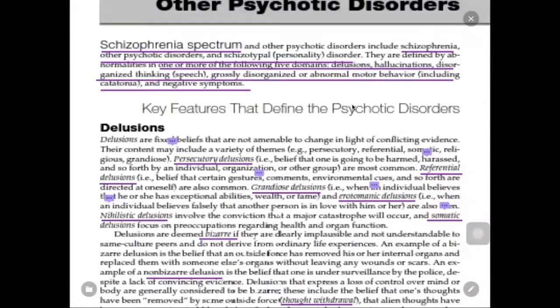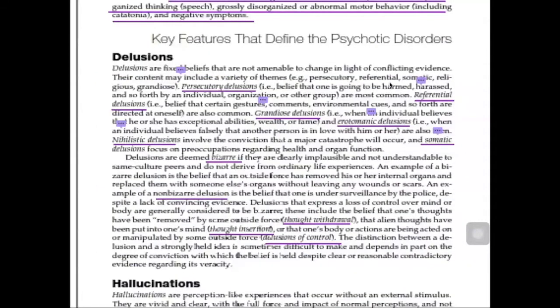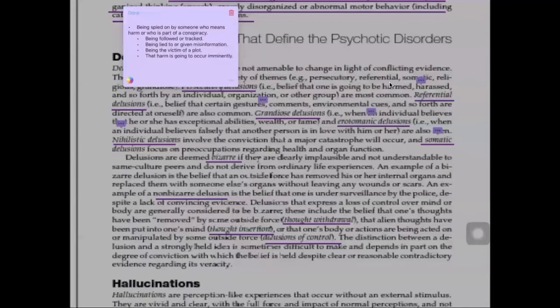The different types of delusions start with persecutory delusions, which is the most common form. The definition is the belief that one is going to be harmed or harassed by an individual, organization, or other group — such as believing one is being spied on, followed, tracked, lied to, or is the victim of a plot.